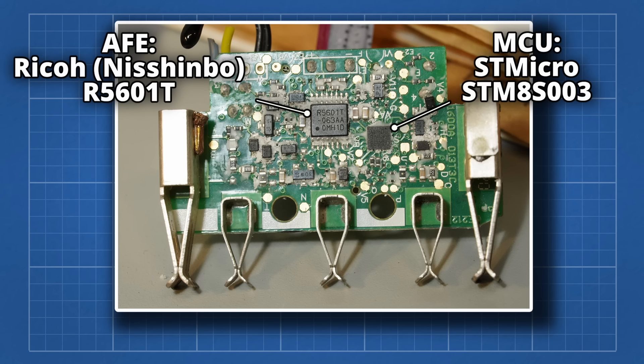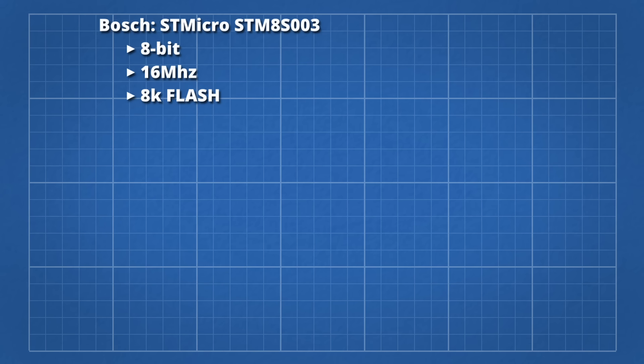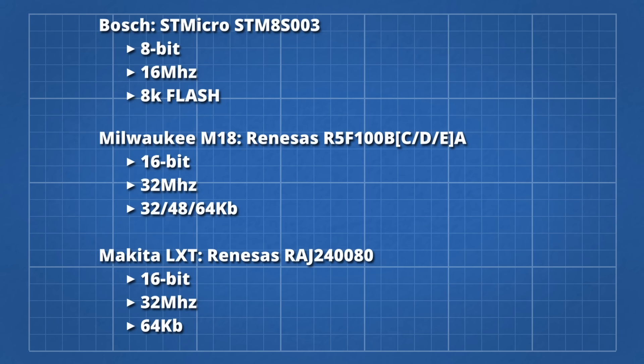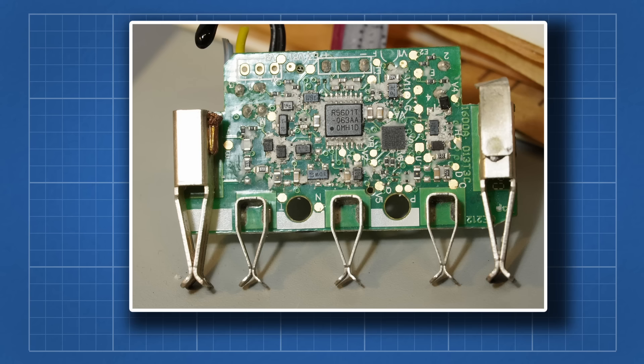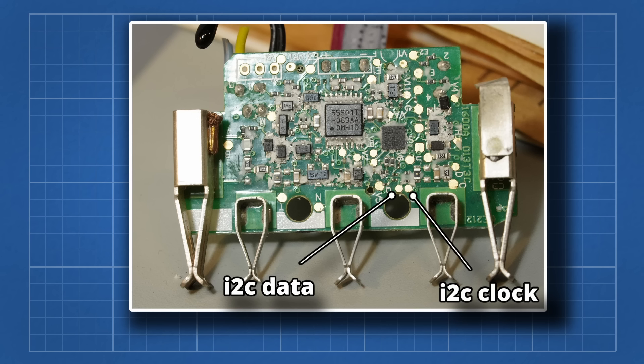They're using an 8-bit 16MHz microcontroller with only 8KB of flash. This is noticeably less powerful than Makita and Milwaukee's, but it's still more than enough for a battery management system. I was also lucky that Bosch were kind enough to add test points for the I2C comms, so I didn't have to scrape silicone off my working battery.